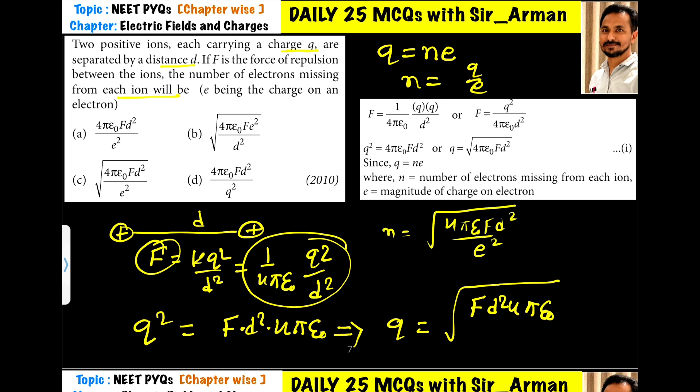If we want n, then we can write n equals q by e, means we will divide this expression by e. So here it is 1 by e, and this will go inside, it becomes e squared.